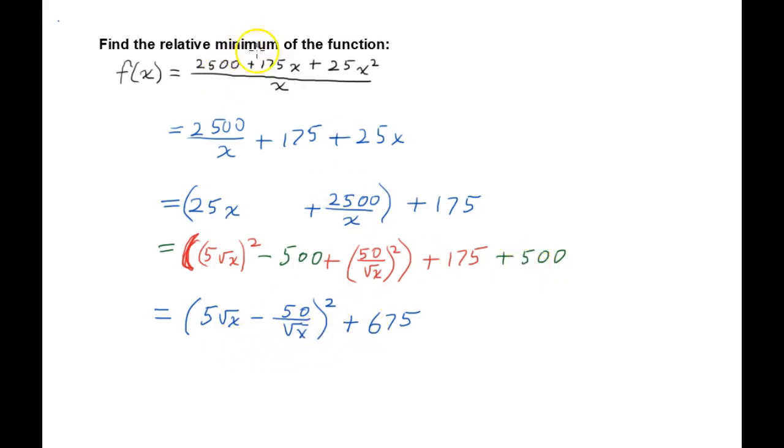Now to minimize, we want to minimize this function. Well, the best we can do is to get this down to zero. Even if we got it down to negative, we're squaring this thing, so we can't do any better than to get this to zero. So I'm going to solve this equation: 5 square roots of x minus 50 over the square root of x equals zero. Now the value of x that makes this true will be the x value that makes this whole function a minimum.